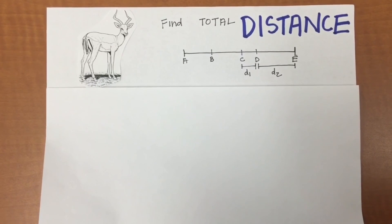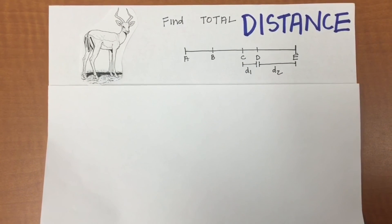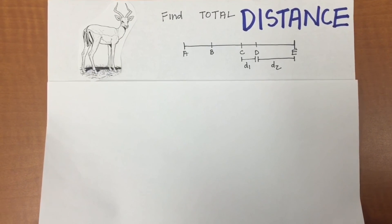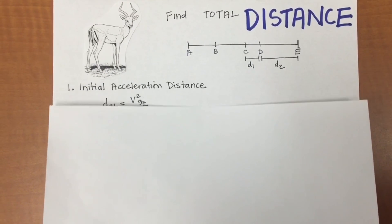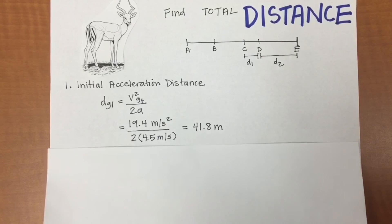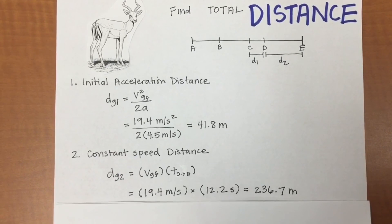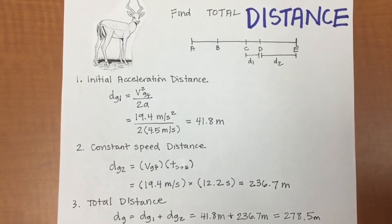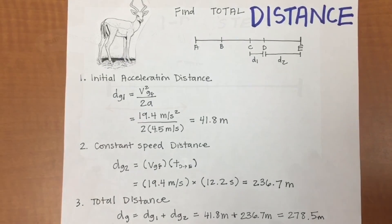We now know the time and distance the cheetah spends running and the time the gazelle spends running. The last piece of the puzzle is to find the distance the gazelle runs. The gazelle takes 41.8 meters to reach top speed and then travels at top speed for another 236.7 meters. Add them together and we know that the total distance the gazelle travels is 278.5 meters.